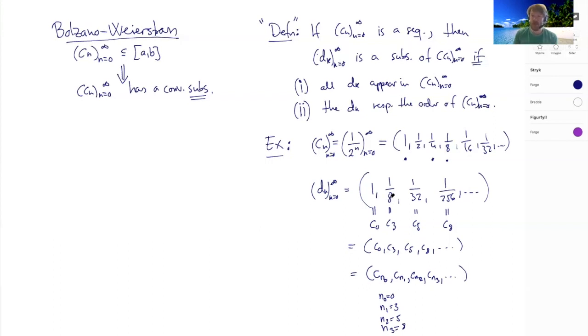When I choose a valid subsequence, I'm choosing Cn's from my original sequence, but where my indices form a strictly increasing sequence. Notice here I'm getting a sequence Nk that's strictly increasing. This gives me an elegant way to formulate this definition.